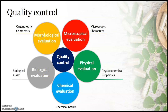In morphological evaluation, organoleptic characters are studied such as color, odor, taste, size, shape, and other external features. In microscopical evaluation, characteristics observed under the microscope are studied, including cellular content, cellular type, histology of the crude drug, and leaf constants such as palisade ratio, stomatal index, stomatal number, vein islet number, and vein termination number.